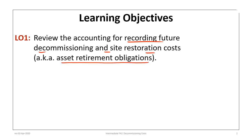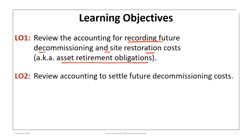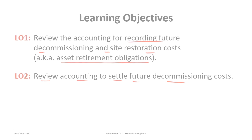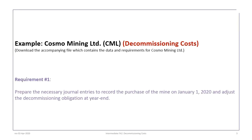You may be familiar with this term from another course. Second, we will review accounting to settle those future decommissioning costs. This tutorial is based on the Cosmo Mining or CML Limited problem, so please ensure that you've downloaded the correct file and have previewed the data and requirements. The first requirement will be to prepare the necessary journal entries to record the purchase of the mine on January 1st, 2020, and adjust any decommissioning obligation at the end of the year.